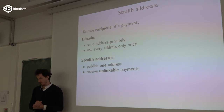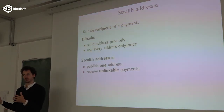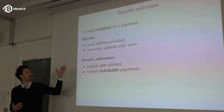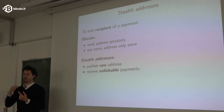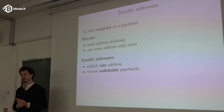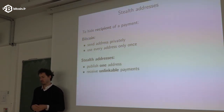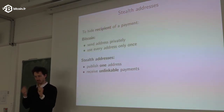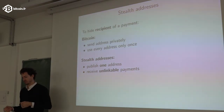What about hiding a receiver? In Bitcoin, if Wikileaks publishes one address for donations, you can see all transactions going to that address. To avoid that, you could send addresses privately and only use each once, so you can't link several transactions to the same address — but that's very cumbersome. This can be solved with stealth addresses: you publish one address, receive payments, and no one knows those payments went to you because they appear unrelated to your address. Moreover, all these received payments also appear unrelated to each other.